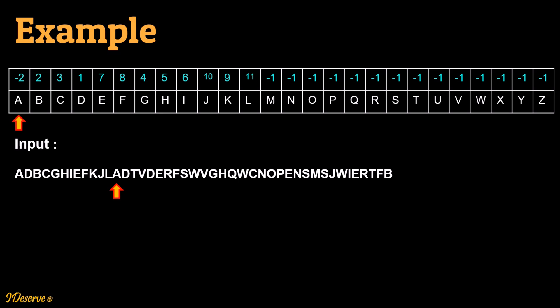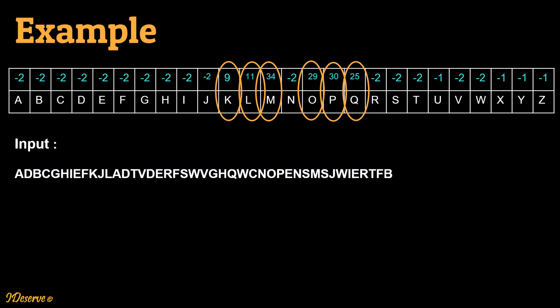Now keep doing these operations on the remaining characters of the string. Once the iteration over the string is complete, the index array would look like this. The final step is to find the minimum value in the index array which is non-negative. Minimum value which is non-negative signifies the index of the first character in the string which occurs only once. While iterating over the index array, you would find the highlighted elements as non-negative, meaning these characters occur only once. Here the minimum non-negative value is 9, so we return the character at the 9th index in the input string, which is K. This is our solution.